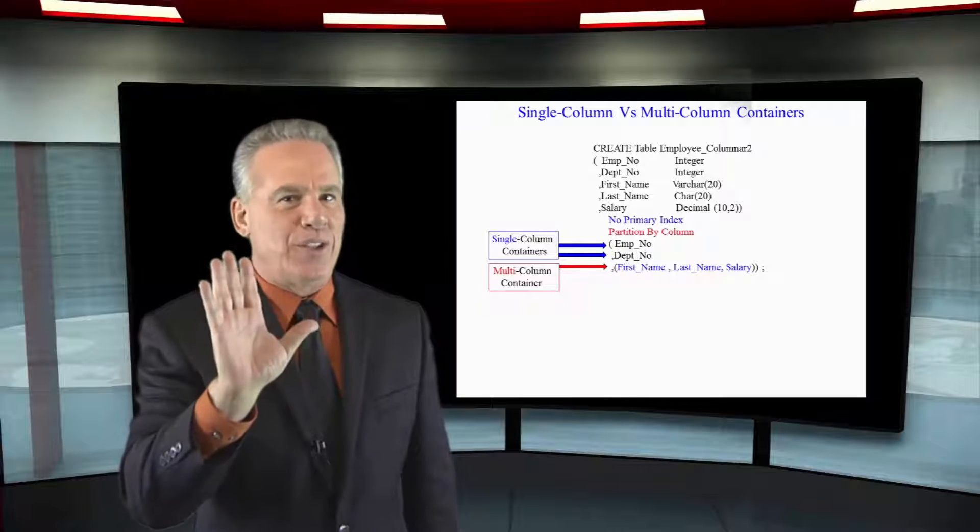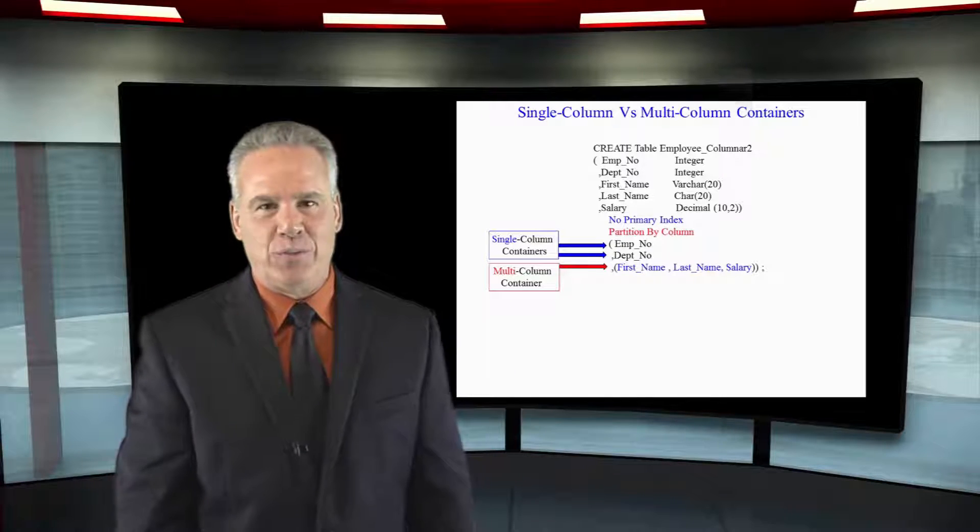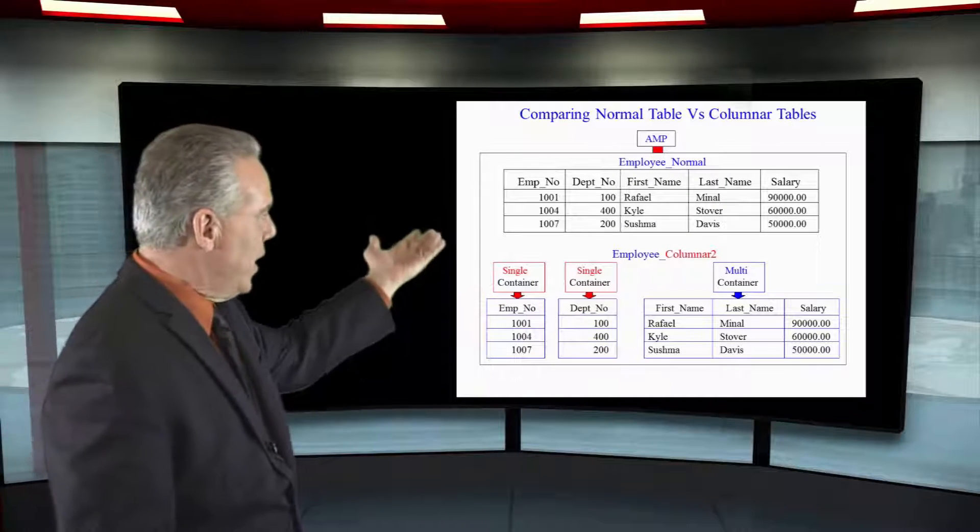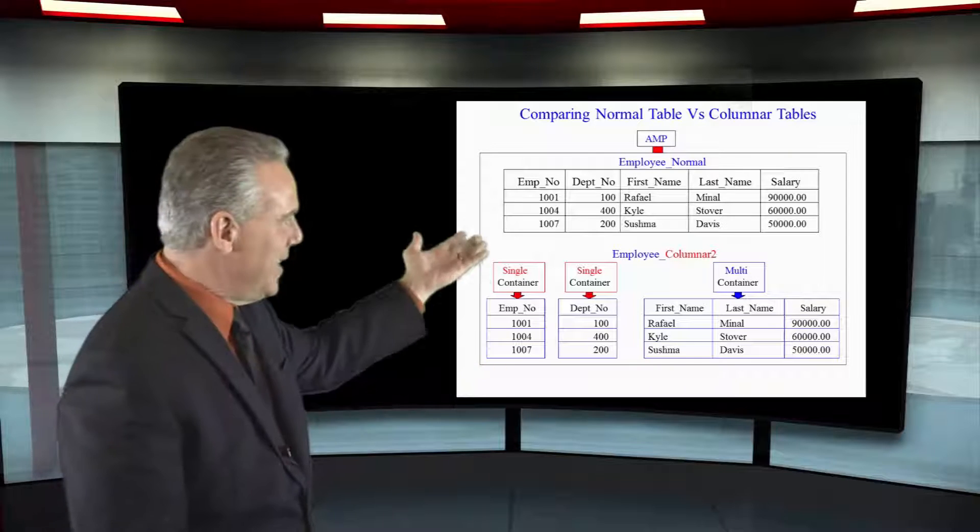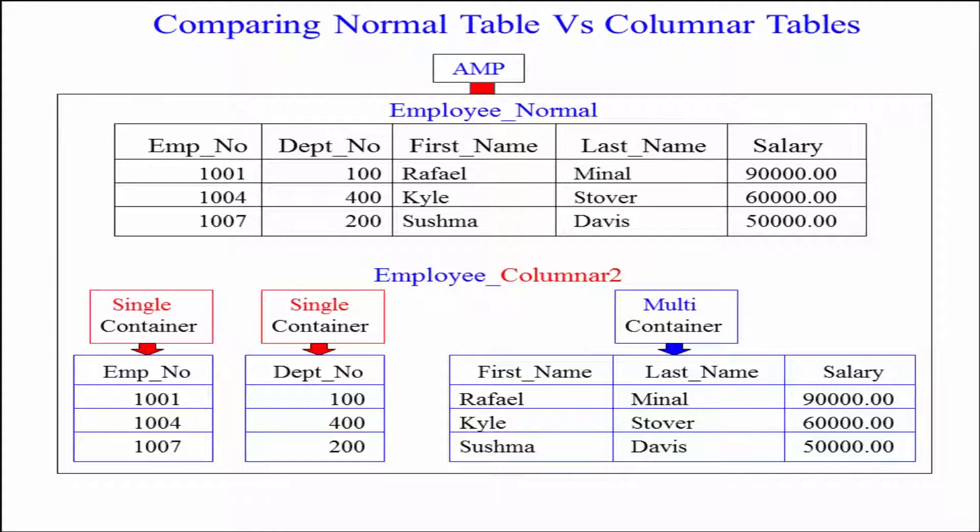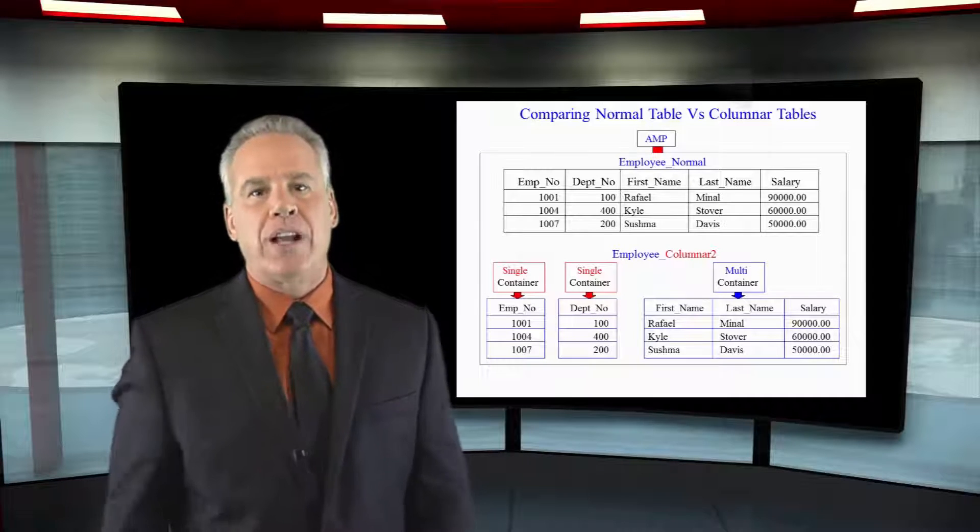That's the options that columnar gives you. This is what that's going to look like. We've got EMPNO as its own container, DEPNO, and then of course first name, last name, and salary right there. You can see the top's a normal table and below we've got our containers for the columns.